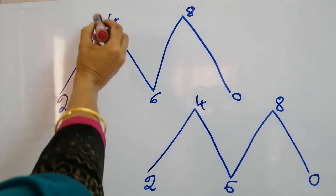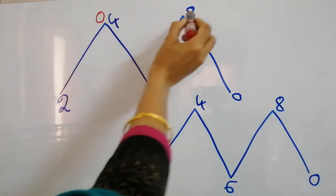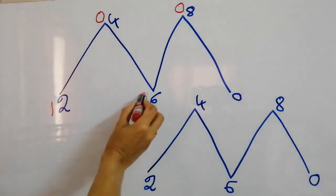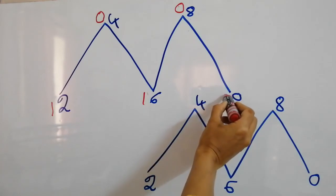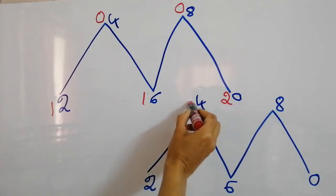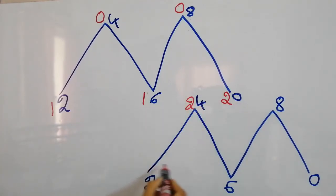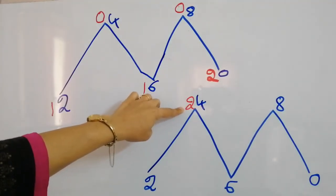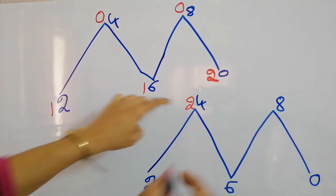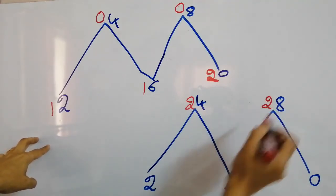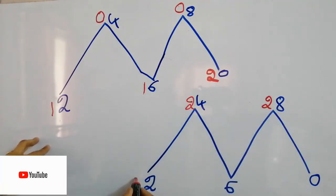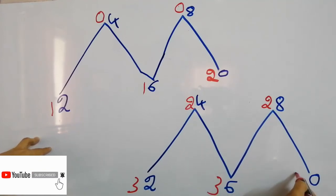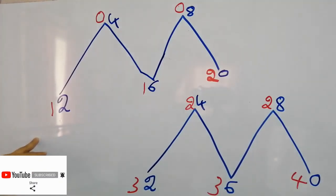Then here we are going to next. We are going to 0. First, here is 0. Then 1, 1. Then here is the number: 2. Then again 2. We are going to finish the 2. Then 2. Then again 2. Then 3. Then 4.